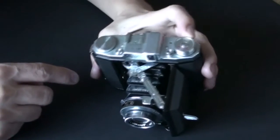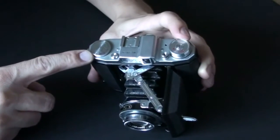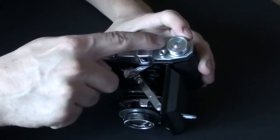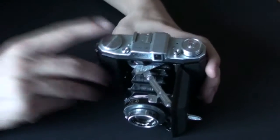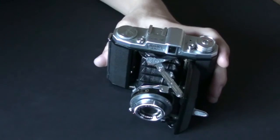Over here you have a winding knob, a film advanced knob. It is marked with a red arrow, and it tells you which direction to turn it in order to advance the film.